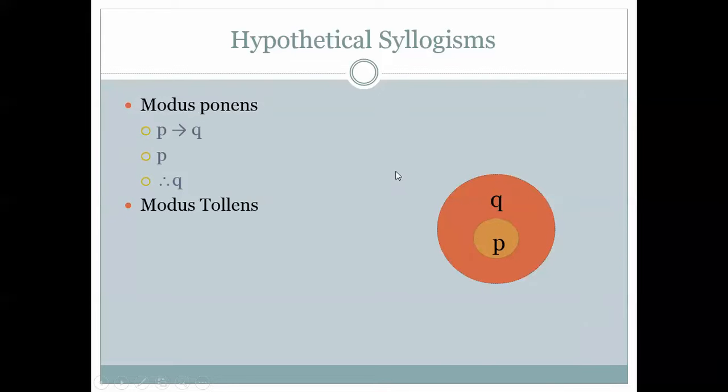The next inference form is modus tollens. We can also do: if P then Q, P, therefore Q. Think about it — is there another way to get a conclusion out of if-P-then-Q?